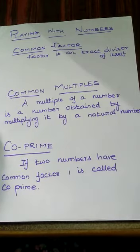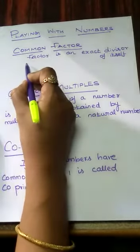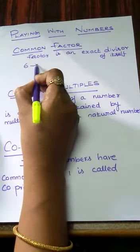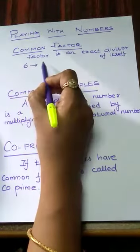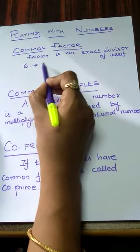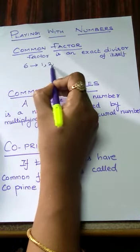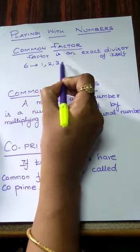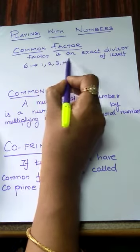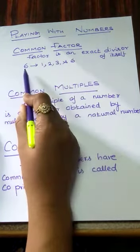What is a factor? A factor is an exact divisor of itself. Suppose we have to select one number, that is 6. What are the factors of this number? 1 divides 6, 2 divides 6, 3 divides 6, and 6 also divides 6. So these are the factors of 6.